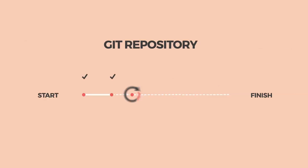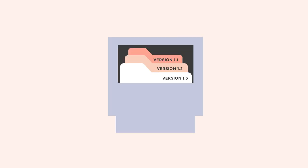A Git repository, or repo for short, is a folder Git creates to store current and past versions of your files. Your repo will automatically create a new version of your files whenever you save your changes to Git. Think of a repo as a filing cabinet full of folders labeled version 1.1, version 1.2, version 1.3, and so on. You and anyone else you provide access to can make changes to the files in your repo.